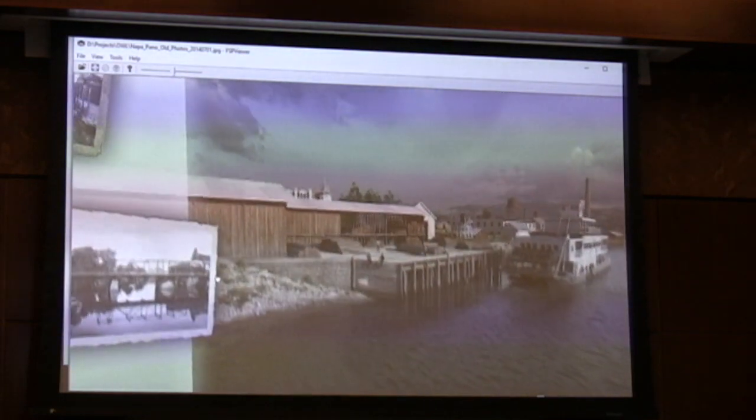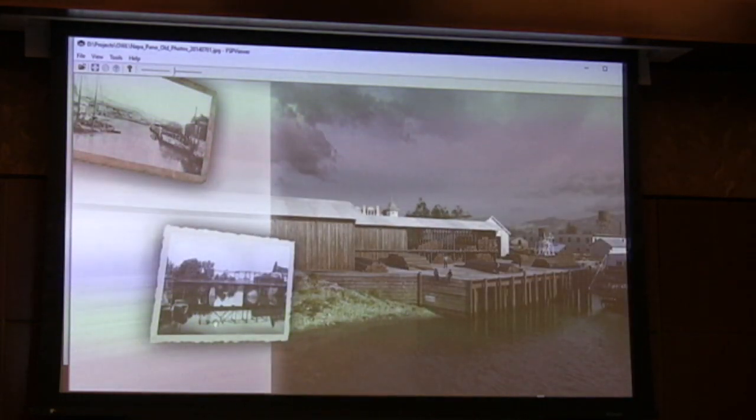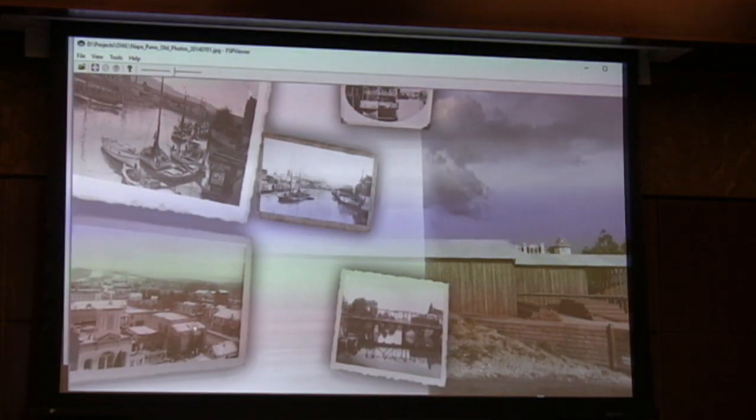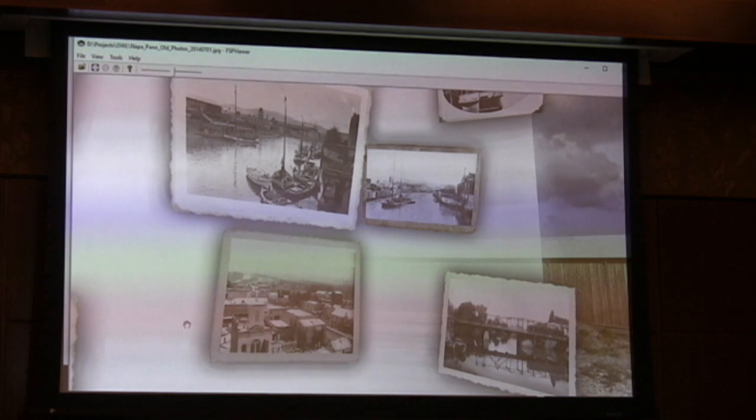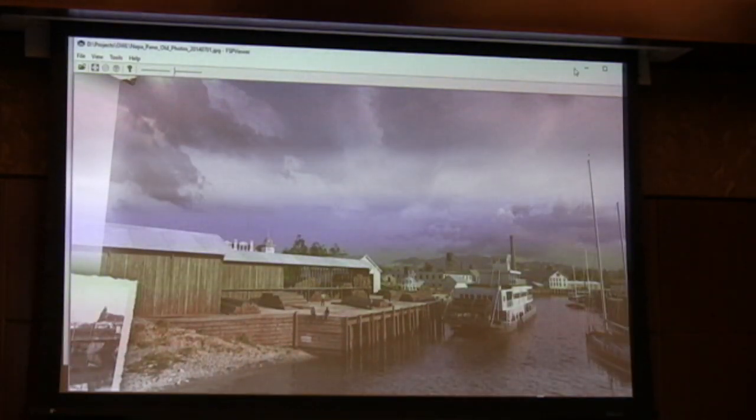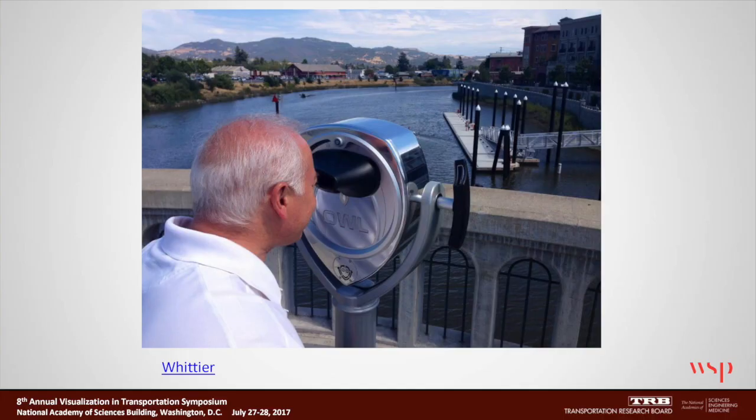What was interesting about this project is the 3D model was developed from old photographs. We took the photographs and roughly lined them up with the real view — we had a 3D model of the existing condition — and superimposed the photos and used that as a base to develop a 3D model of the historical condition. That image shows the mayor standing in front of the device on the Napa River Bridge.